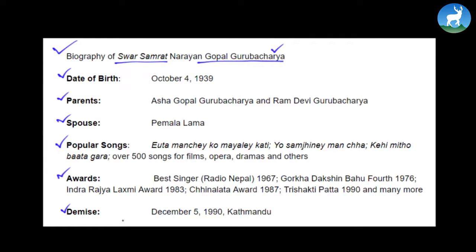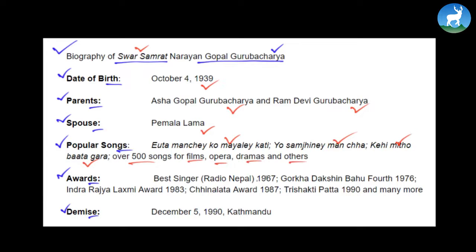In the first paragraph, the introductory paragraph, just write about his date of birth, his parents and spouse, and things like that. In the second paragraph, write about struggles and everything — write about the popular songs, write about the awards and demise. In the last paragraph, write about his or her demise and how he or she is remembered till date. The date of birth of Sur Samrat was October 4, 1939. His parents were Asa Gopal Guruvacharya and Ram Devi Guruvacharya. The name of his spouse was Pemla Lama. He sang famous songs like Euta Manche, Go Maia Lekati, Yosamjine Manche, Kehimi Tho Batagara — over 500 songs for films, opera, dramas, and others.